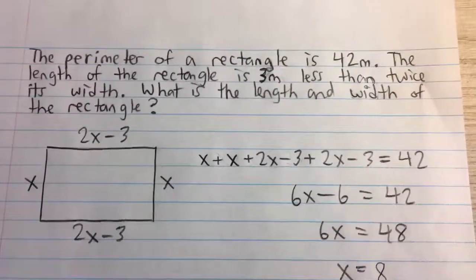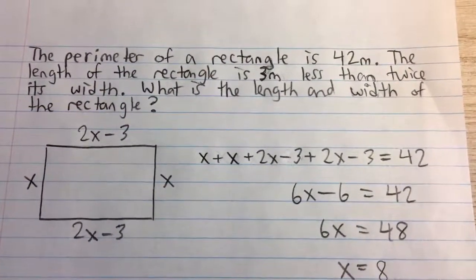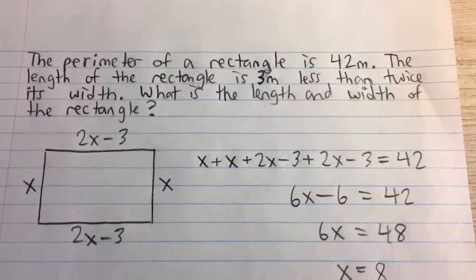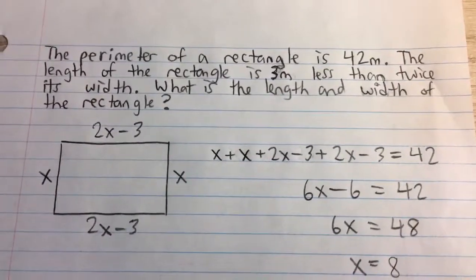The perimeter of a rectangle is 42 meters. The length of the rectangle is 3 meters less than twice its width. What is the length and width of the rectangle?